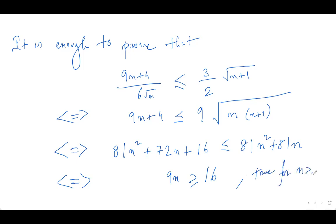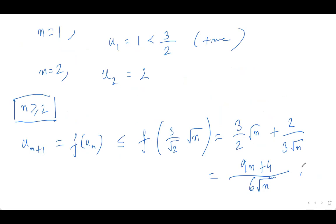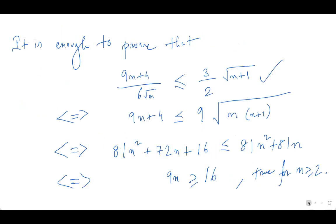This is true for n ≥ 2, and thus we are done. We have proved that u_{n+1} ≤ (3/2)√(n+1).